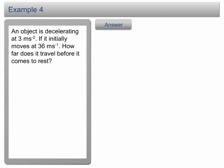Example 4. An object is decelerating at 3 m per second squared. If it initially moves at 36 m per second, how far does it travel before it comes to rest? Click on the answer button to proceed.